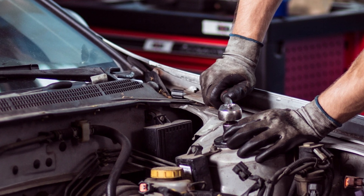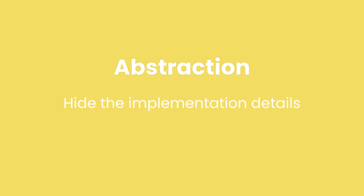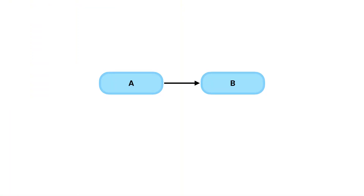Now, how can we reduce the coupling between these two classes? Well, earlier we talked about the abstraction principle of object-oriented programming, which says we should hide the implementation details of our classes and only expose what is necessary. So by hiding certain members using the private keyword, class A will know less about class B, and this will loosen the relationship between these two classes. But that's not enough, and that's where interfaces come to the rescue. With an interface, we can completely decouple A from B so it knows absolutely nothing about it — like it doesn't even exist. If we change B, A is not going to be affected.